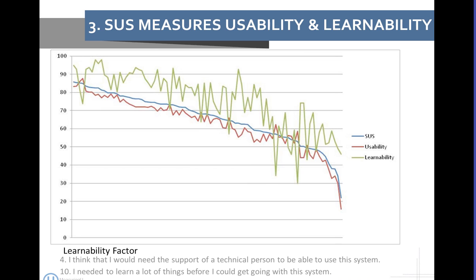The third thing to know about SUS is that while it was originally intended to be a single-dimensional measure of one construct — just usability — it was never subjected to the next layer of psychometric validation. In that process you take responses and perform a factor analysis, which looks at correlations between items to identify latent patterns or latent factors. We had enough data to do the factor analysis and found evidence that there were actually two things being measured: a factor of usability and a factor of learnability, plus an overall score.